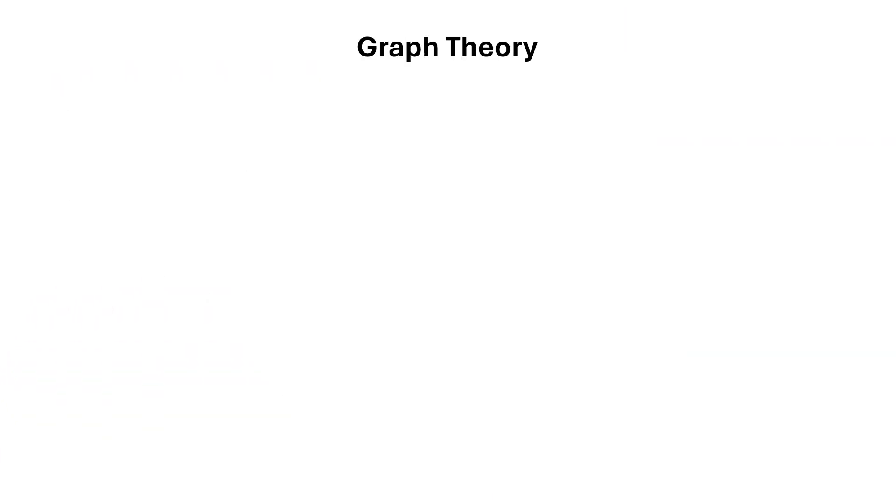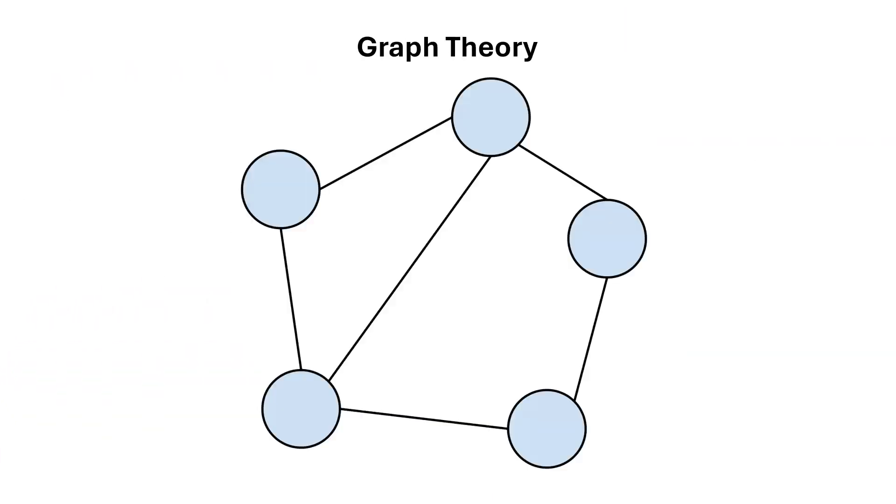Graph theory. Graph theory is the study of objects called graphs that model pairwise relations between objects. Each object is represented as a node, and each relationship is represented by an edge connecting two nodes. Edges can be directed or undirected. Graph theory is the study and analysis of such graphs and their properties.